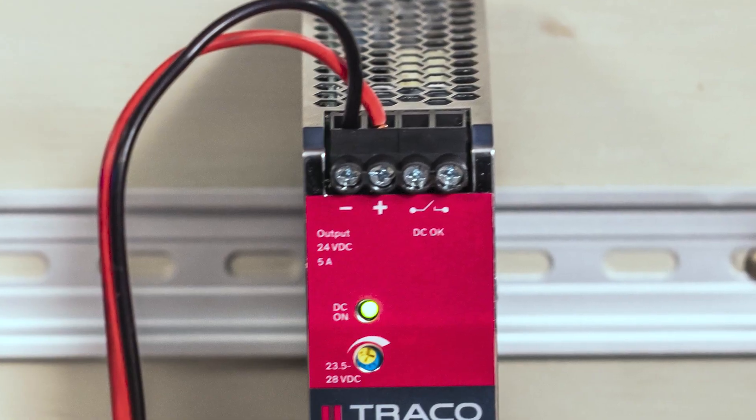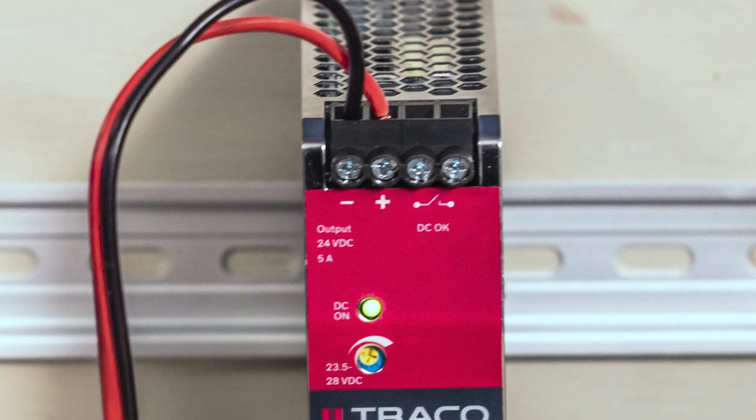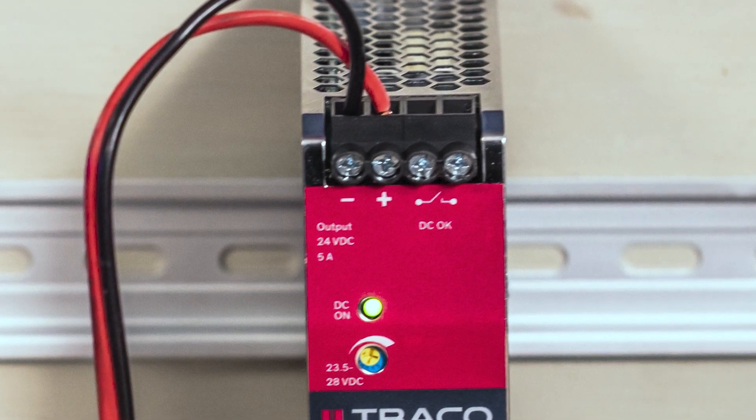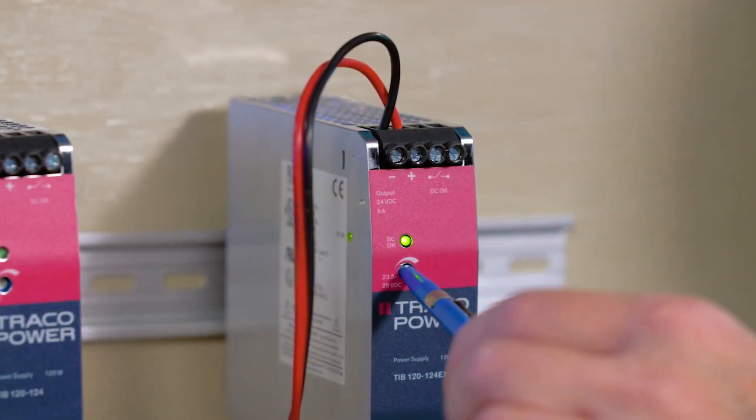The plus and minus output terminals are at the top. These 24 volt output versions are adjustable from 23.5 to 28 volts DC via an adjustment screw on the front panel.